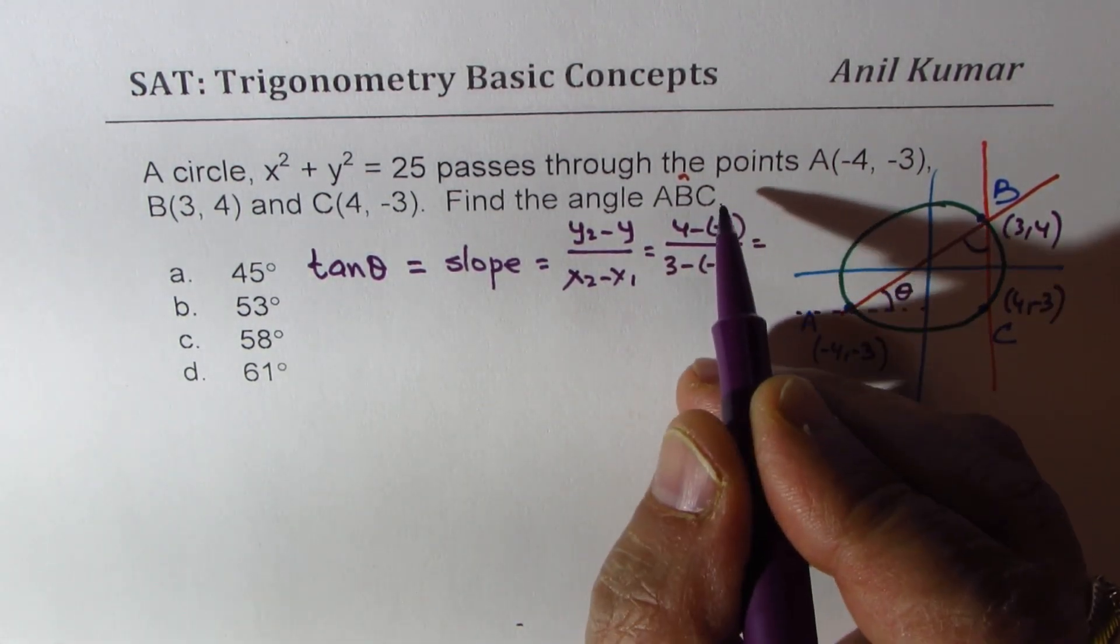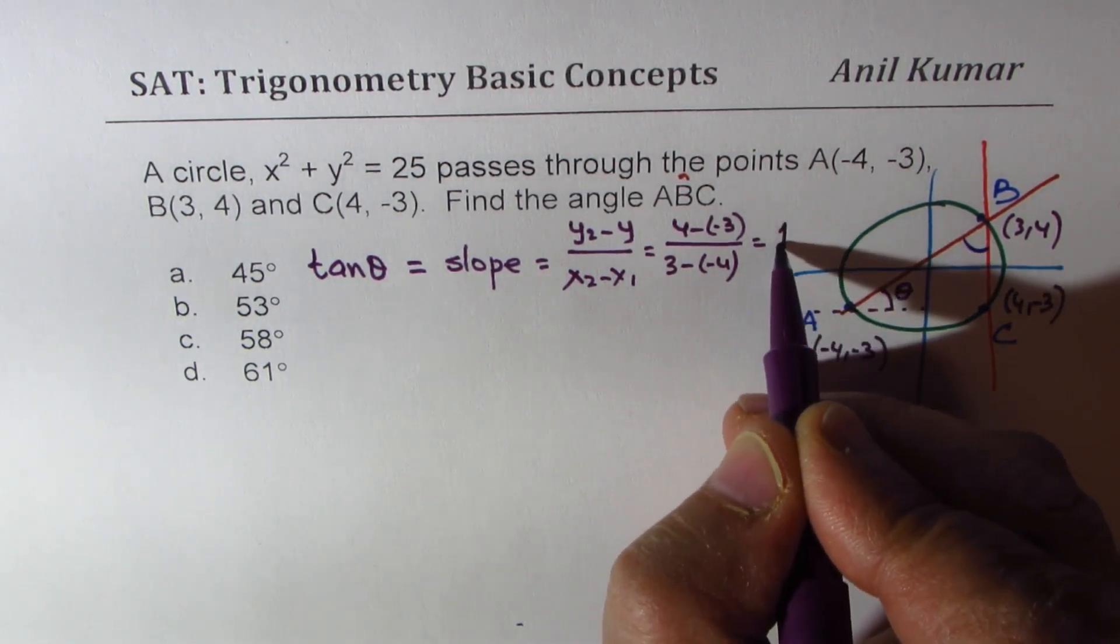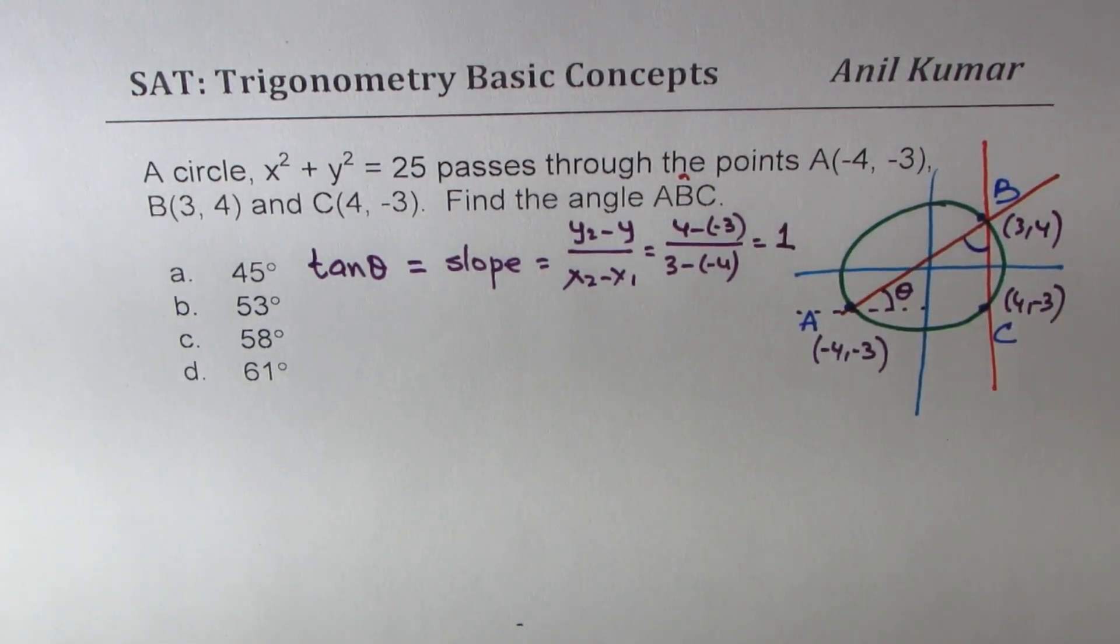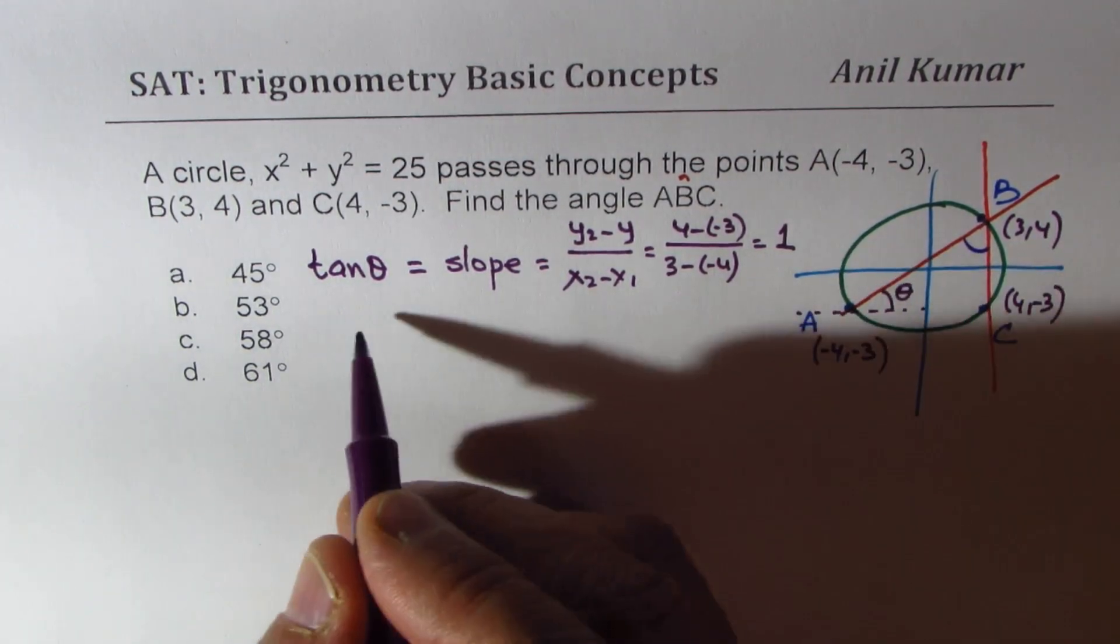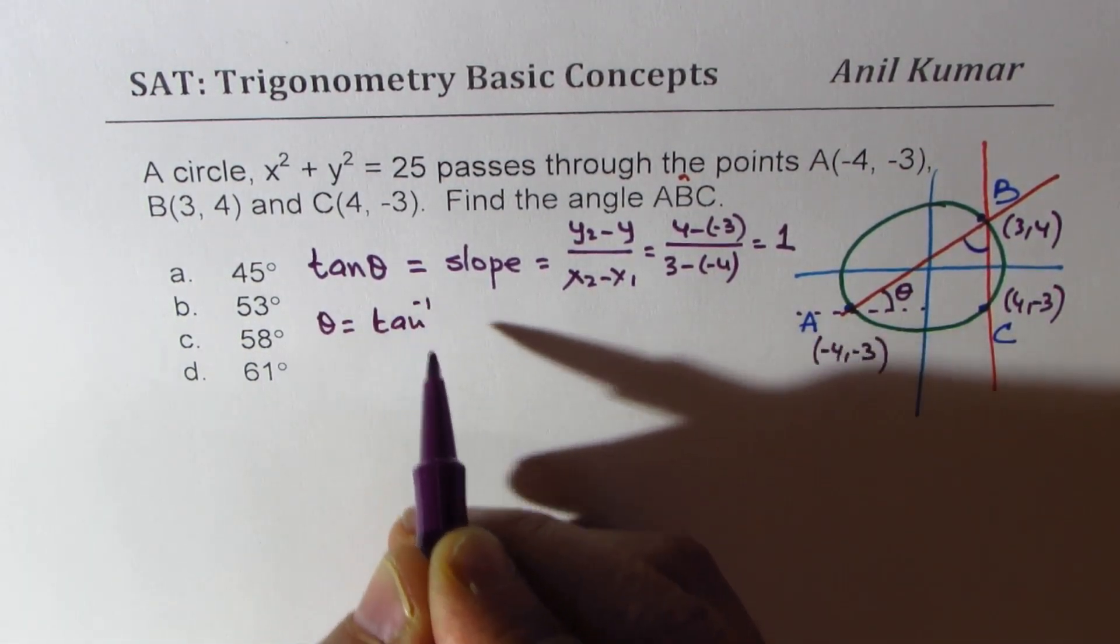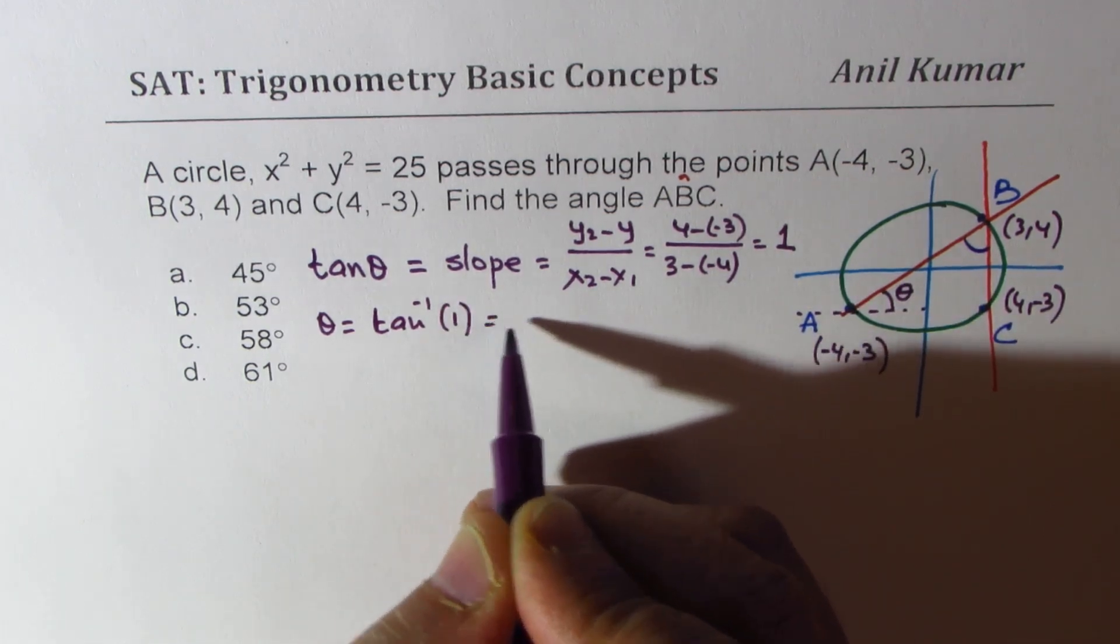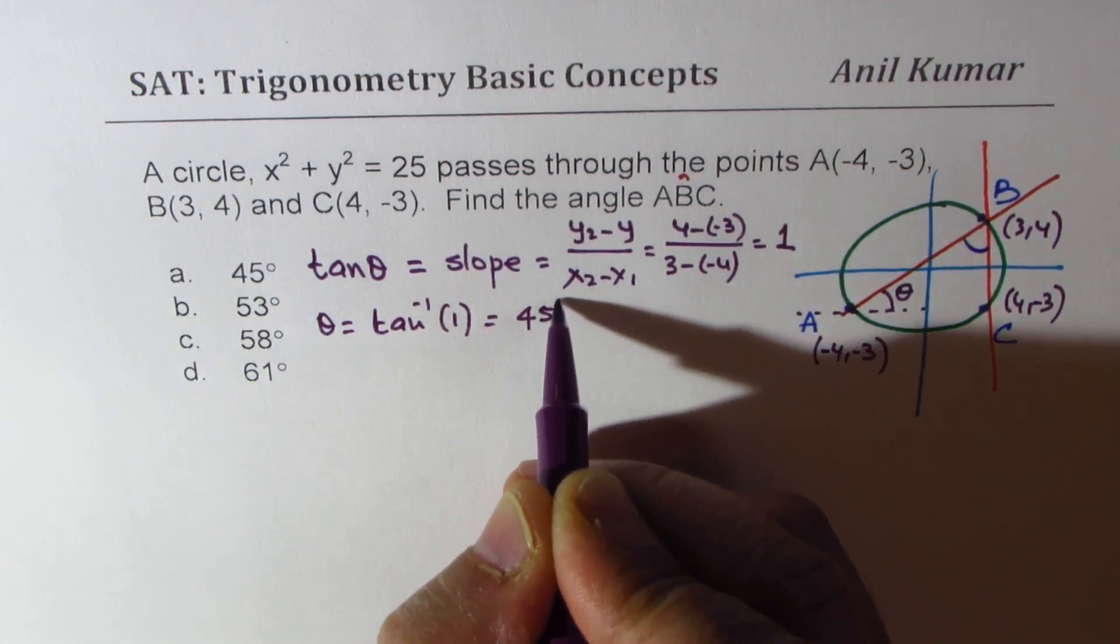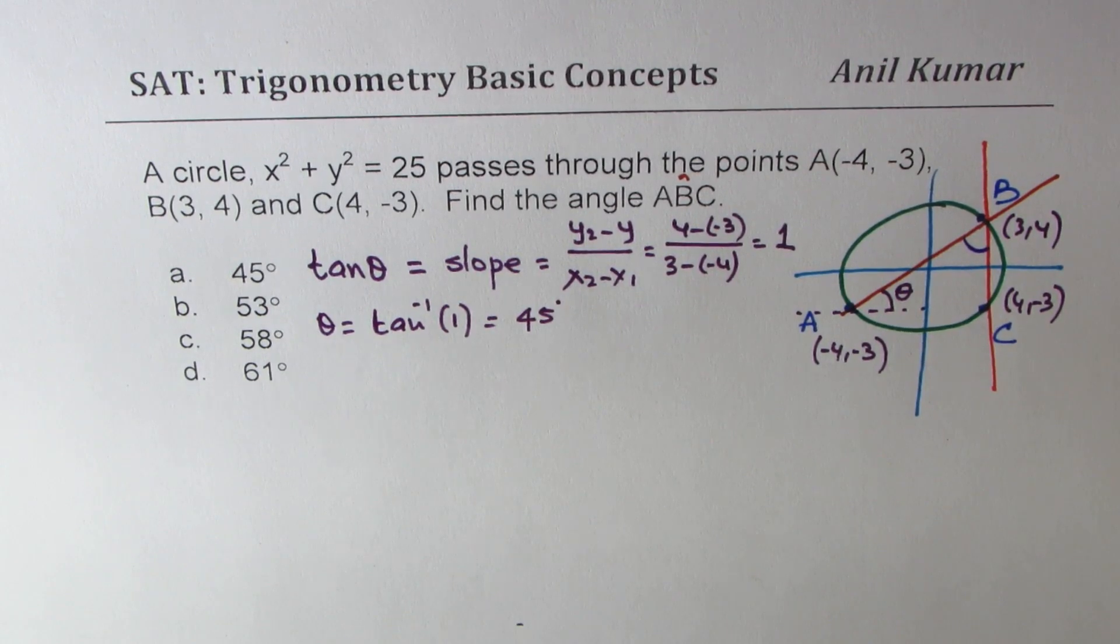Well that gives us 7 over 7, which is 1. So the slope is positive 1. So that means θ equals tan⁻¹(1), which you know is 45 degrees. So we know θ is 45 degrees. So we got one angle.